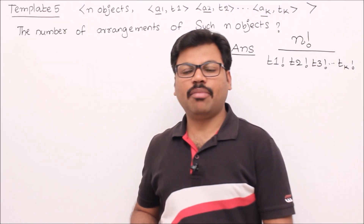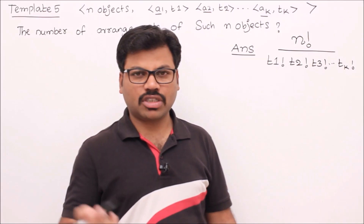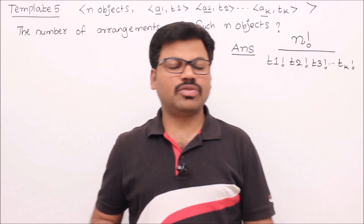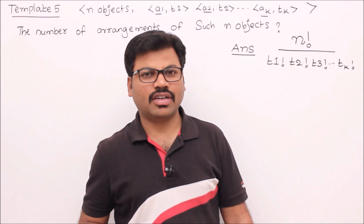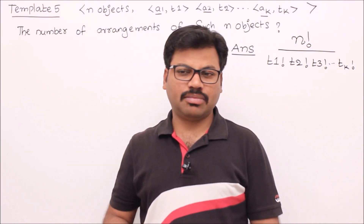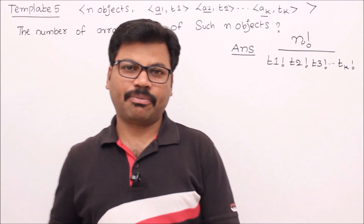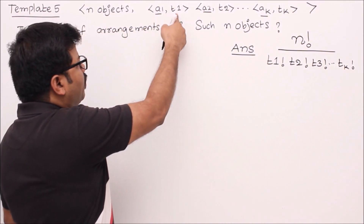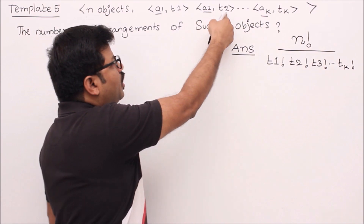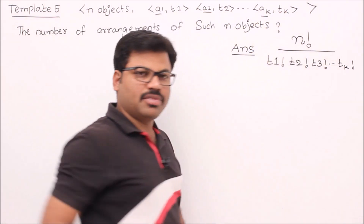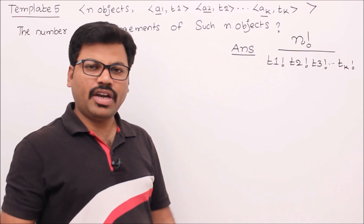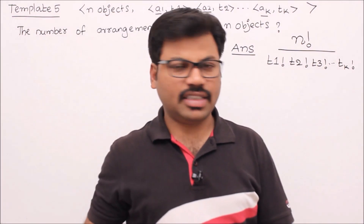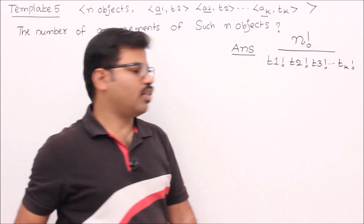Template number 5: you have n objects, but objects may not be different — duplicates are allowed. In such n objects where a1 type of objects are repeated t1 times, a2 is repeated t2 times, and ak is repeated tk times, how many different ways can you arrange them in a line? The answer is n factorial divided by t1 factorial into t2 factorial and so on into tk factorial.